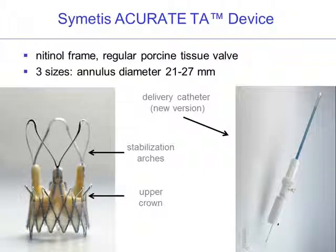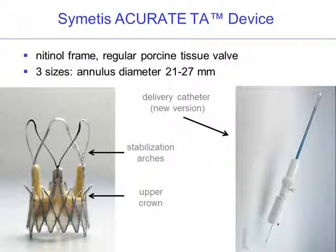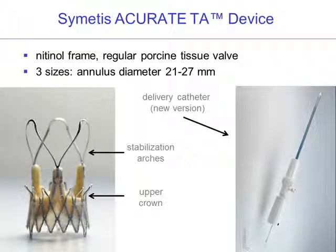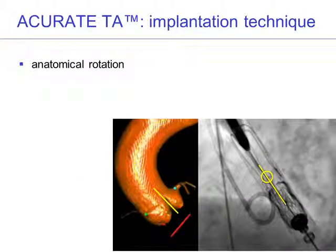On the left, you can see the Nitinol stent. It has two specific features important for implantation. First are the stabilization arches, which are meant to prevent tilting of the valve during deployment. The other key feature is the so-called upper crown — the most distal part of the stent body — which is partially unsheathed during step one of deployment and then provides tactile feedback during actual implantation.